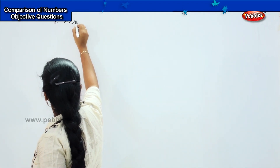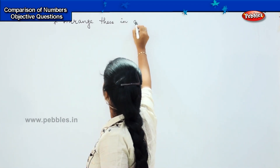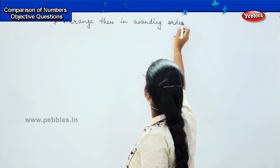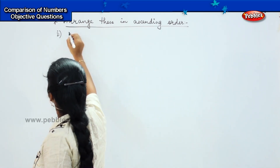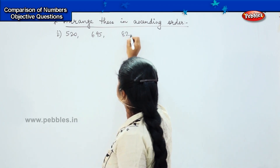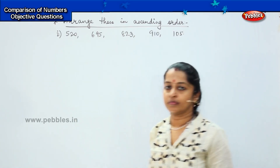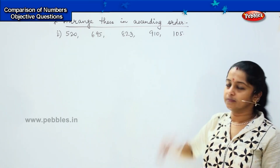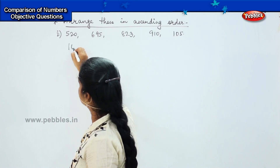Arrange these in ascending order. Your options are: 520, 695, 823, 910, 105. How will you arrange them in ascending order? Tell me which is the smallest among these. It is 105, right? So the first number should be 105.